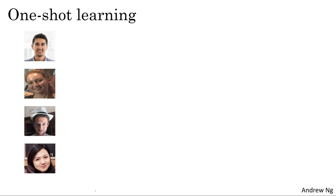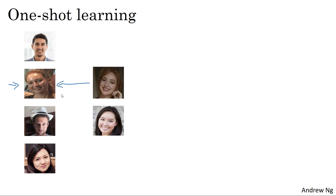Now let's say someone shows up at the office and they want to be let through the turnstile. What the system has to do is, despite having seen only one image of Danielle, recognize that this is actually the same person. And in contrast, if it sees someone that's not in this database, then it should recognize that this is not any of the four persons in the database.